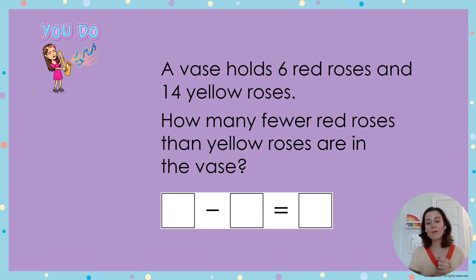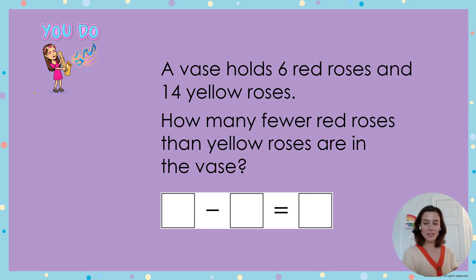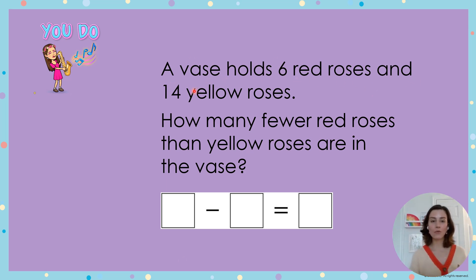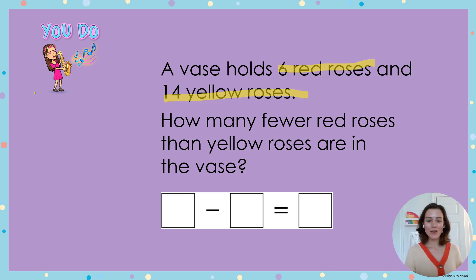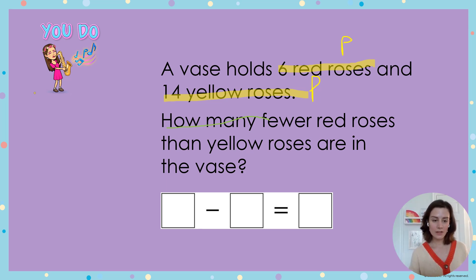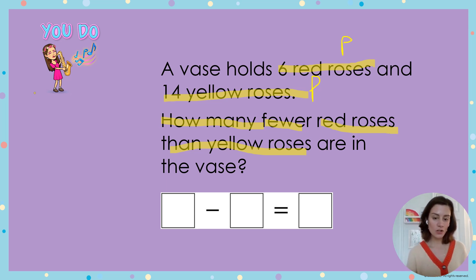It's time for You Do time. I want you to work through this problem. I'll complete step one — Understand It — with you and part of step two — Plan It — and then you are going to finish planning and solving on your own. Let's read the problem: A vase holds 6 red roses and 14 yellow roses. How many fewer red roses than yellow roses are in the vase? I'm going to circle the word 'fewer' and the word 'than.'